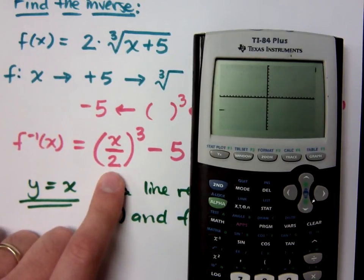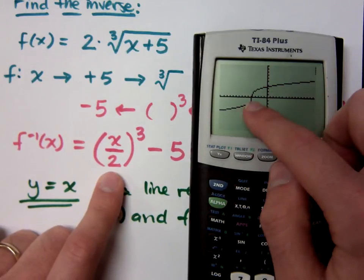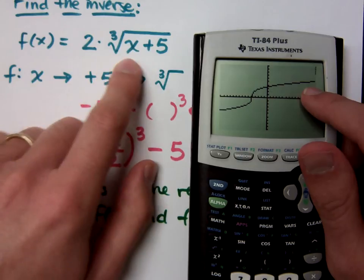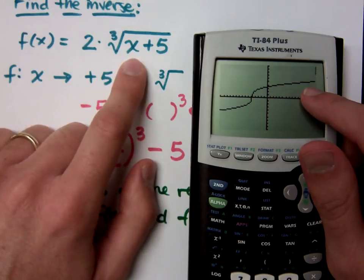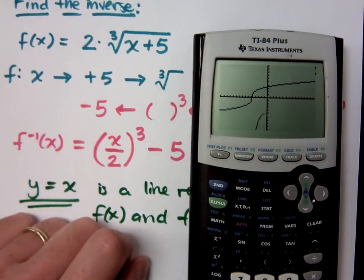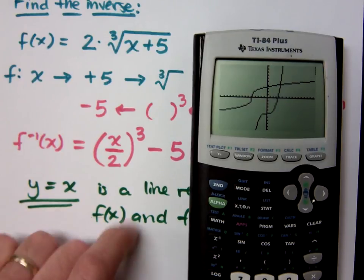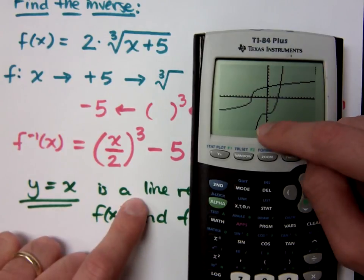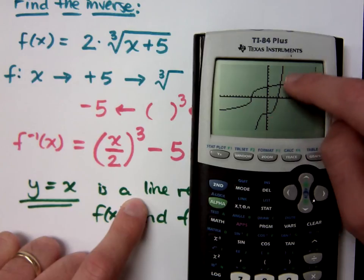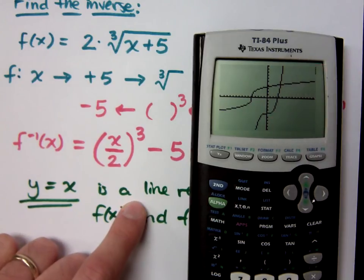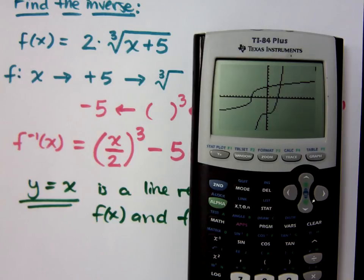So when I graph this, there is 2 times the cube root of x plus 5. Here's what I'm saying the inverse is, which is x divided by 2 cubed minus 5. And now when I do y equals x, you see that it goes right in between those guys. Makes this nice line of reflection there.